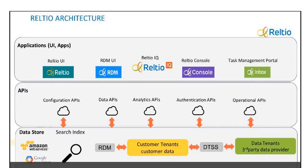This is another view of the Reltio architecture. The application UI is the Reltio UI where you can view everything about the data. RTM UI means reference data management — it's a lookup table database. For example, if country is an RTM entity and there are 500-plus countries with city and state information, or any medical terminology that is predefined and required, you can put it here.